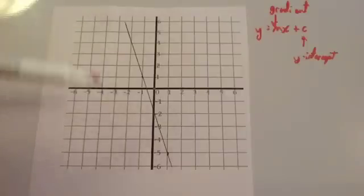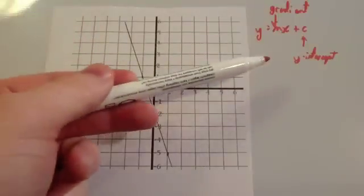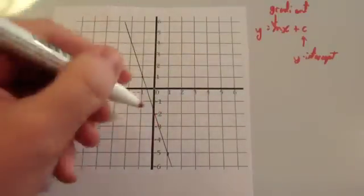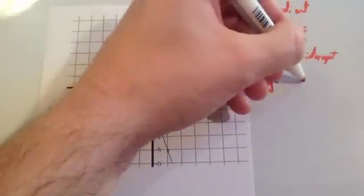Okay, let's work out the equation of this line. So, this line obviously is going down, so it's got a negative gradient. Let's start off, we've got y equals mx plus c. c stands for the y-intercept, so the y-intercept here is minus 2. So, it's going to be y equals something x minus 2.